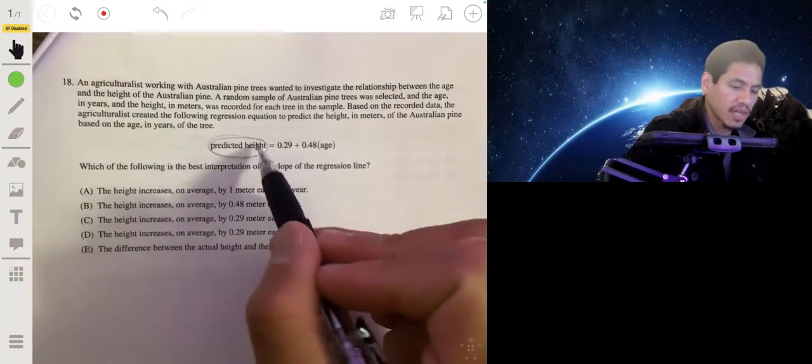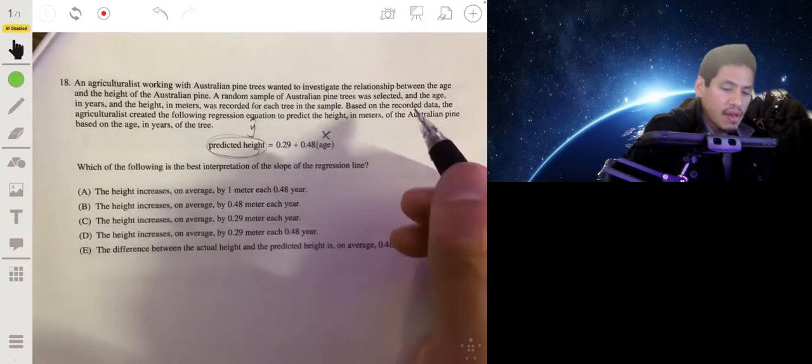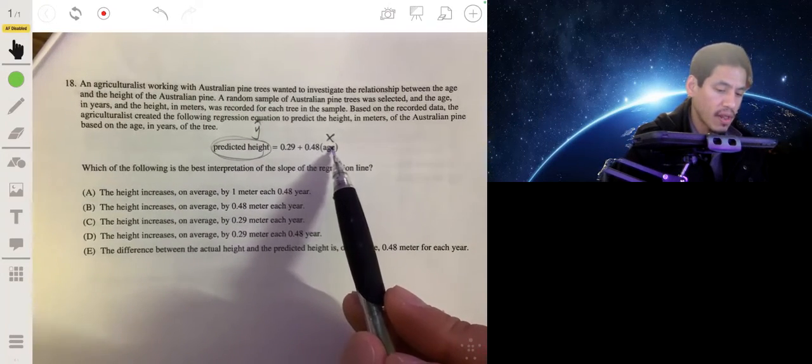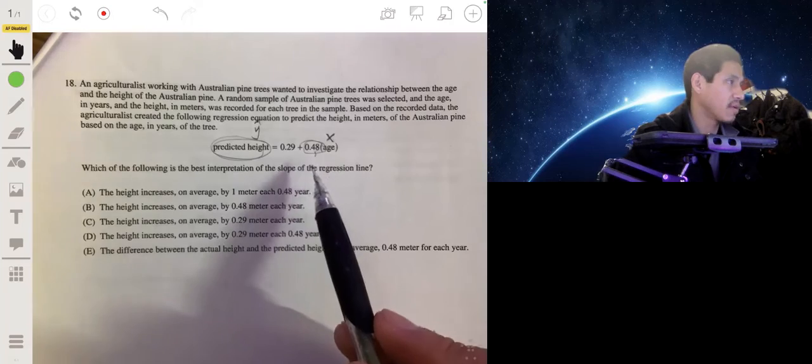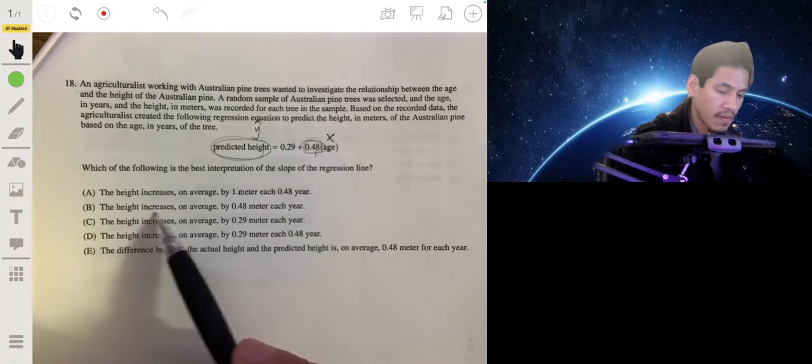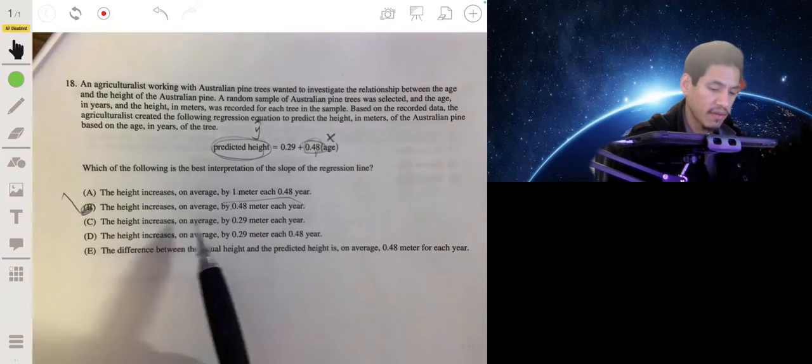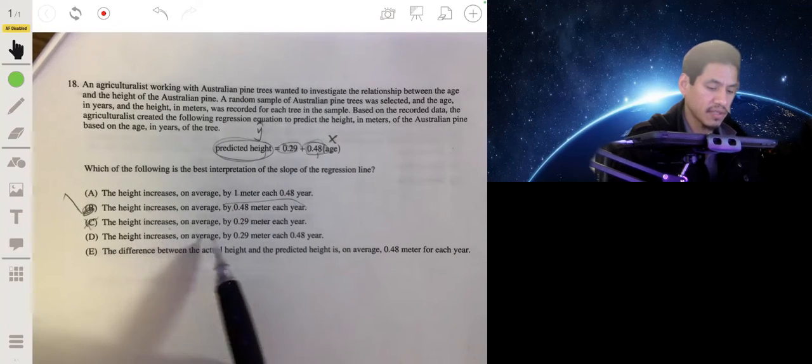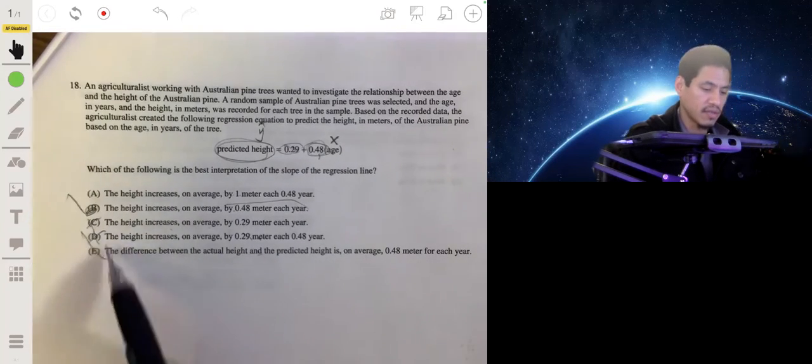Okay, so we're getting our predicted height, think of that as your y hat, from your age, think of that as your x. So we would say that as the age goes up by one, the predicted height would increase by 0.48 meters. So what's the best interpretation of that, let's see what that would be. As age goes up by one, the height goes up by 0.48 meters. So on average, looks like B. Let's just look at the other ones, make sure. It's definitely not going to be C, because this is the y-intercept. That does not describe rate of change. Not 0.29 again. The answer is B.